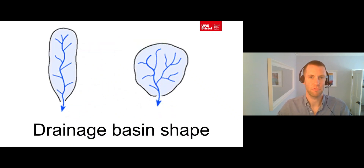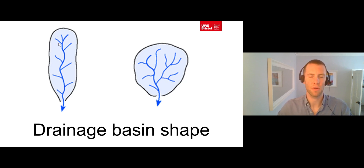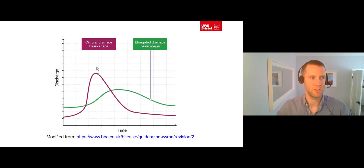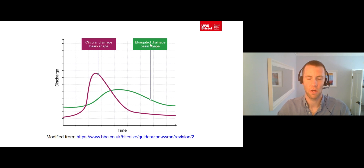Drainage basin shape also has a role to play. Circular drainage basins result in the water from a precipitation event all arriving at a similar time at the outlet, whereas in an elongated basin the arrival of water is more spread out over time. This means that drainage basins that are more circular in shape tend to be flashier than those that are long and thin, because circular drainage basins have more water arriving over a shorter time period and therefore have higher peak discharges, whereas in elongated drainage basins the water arrives spread out over a longer time period and therefore their peak flows are less.